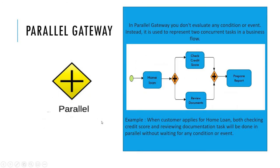Next is parallel gateway. In a parallel gateway, you don't evaluate any condition or event. Instead, it is used to represent two concurrent tasks in the business flow. For example, when a customer applies for a loan, both checking the credit score and reviewing documentation tasks will be done in parallel, without waiting for any condition or event.